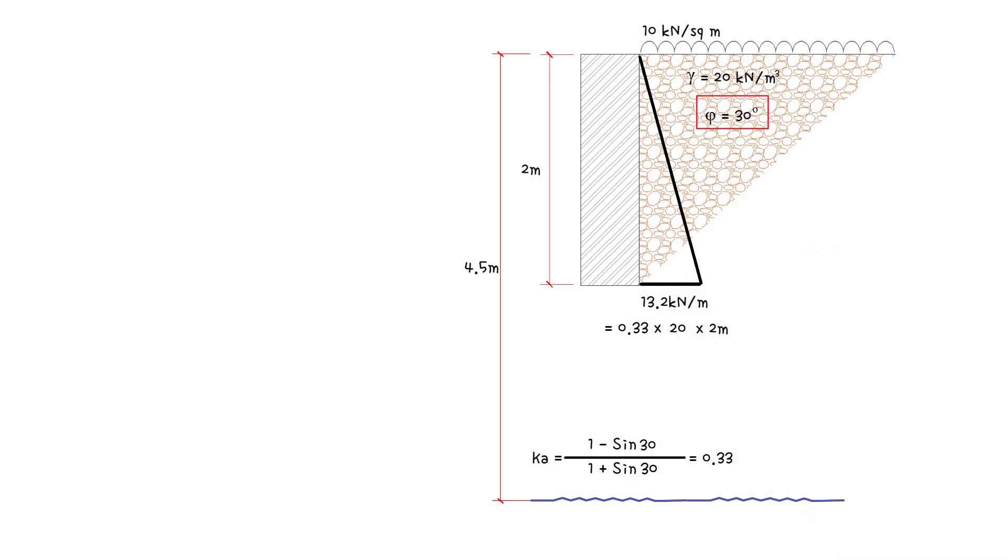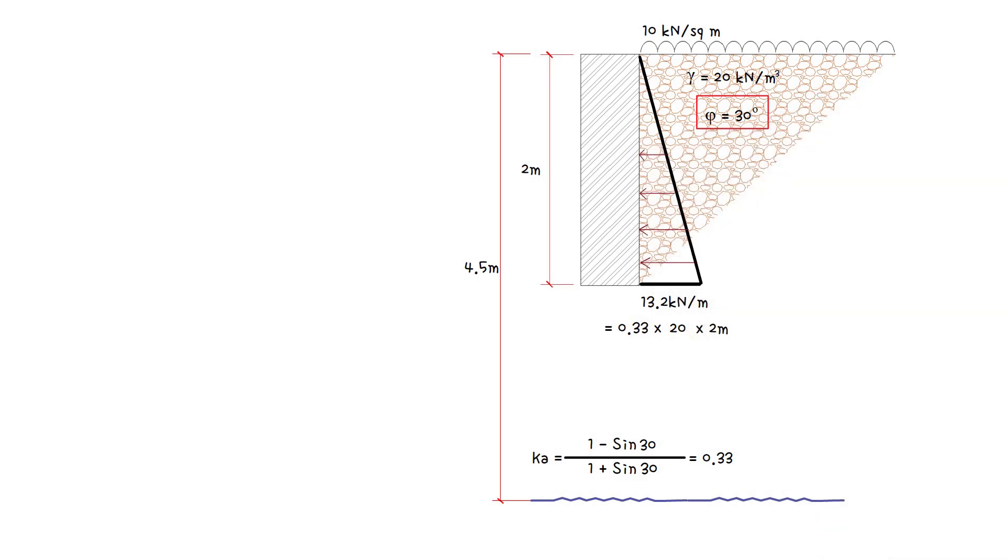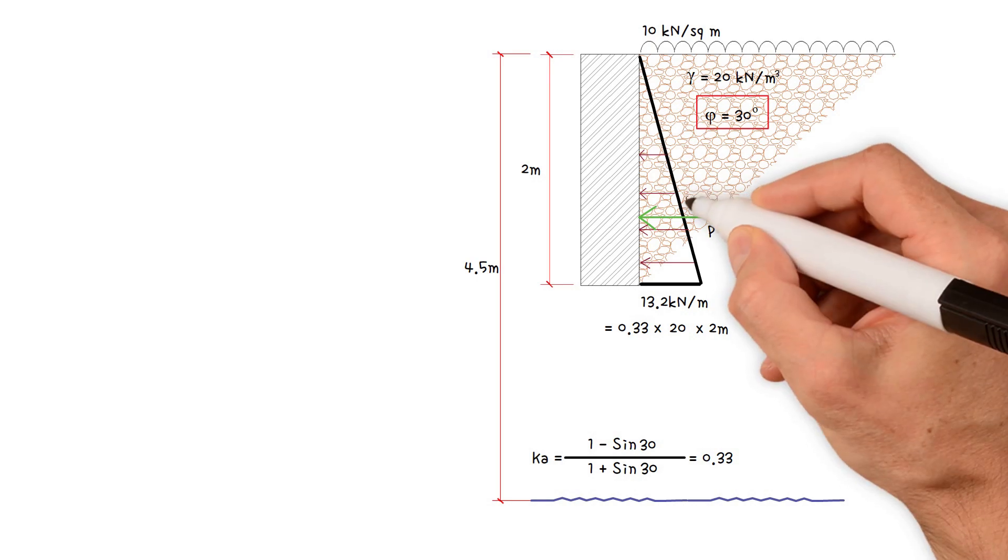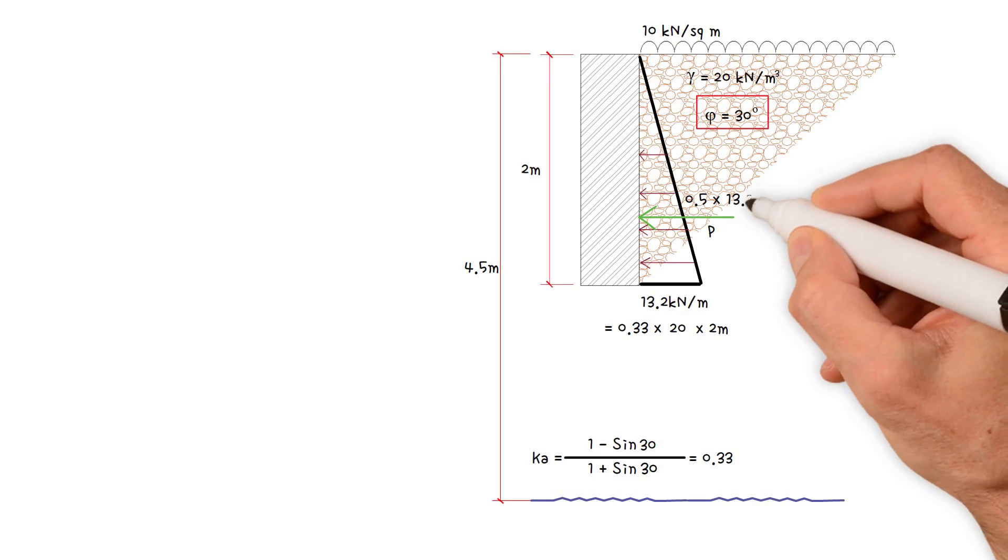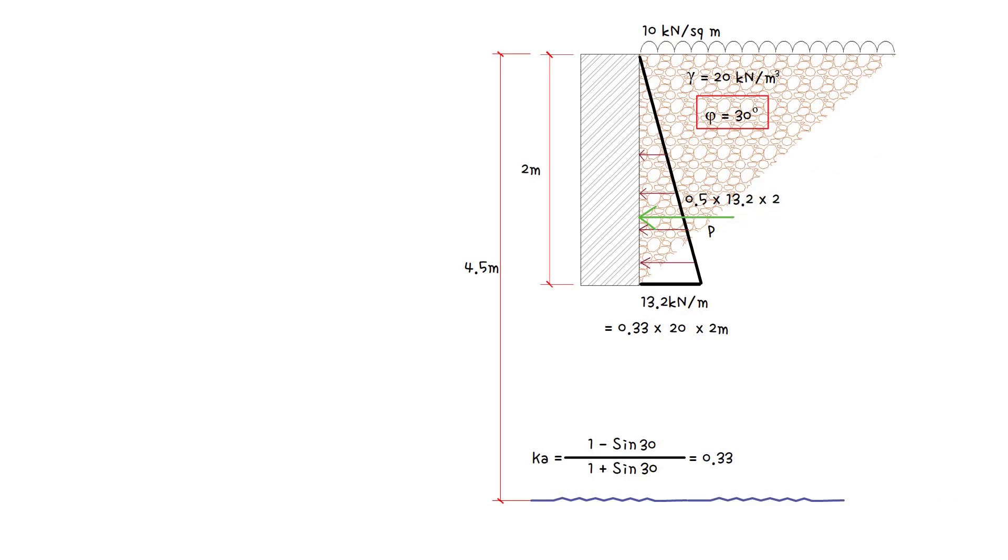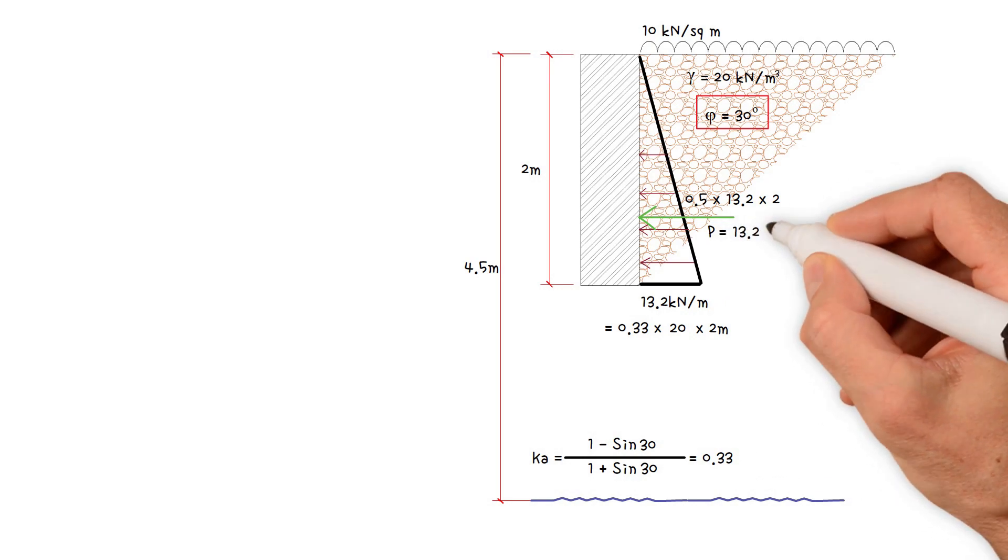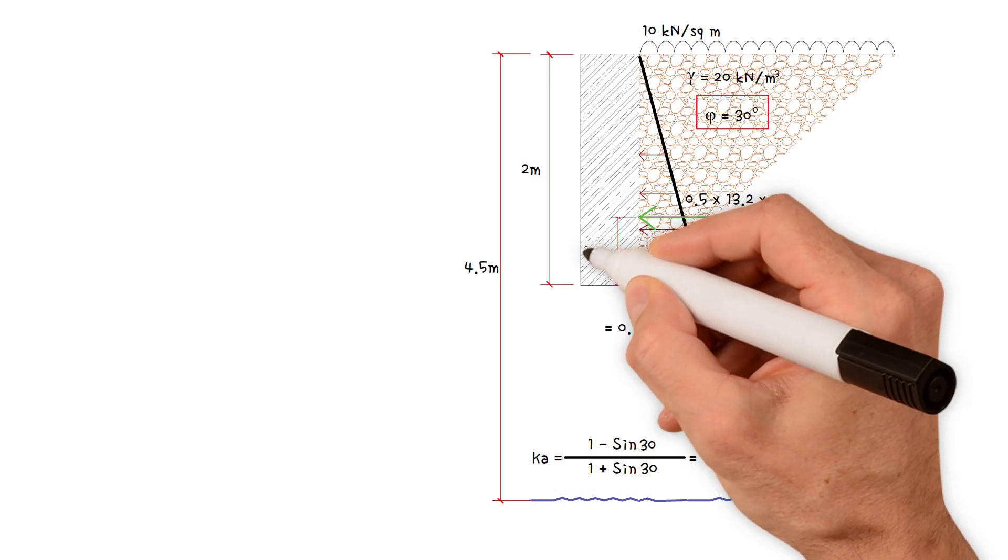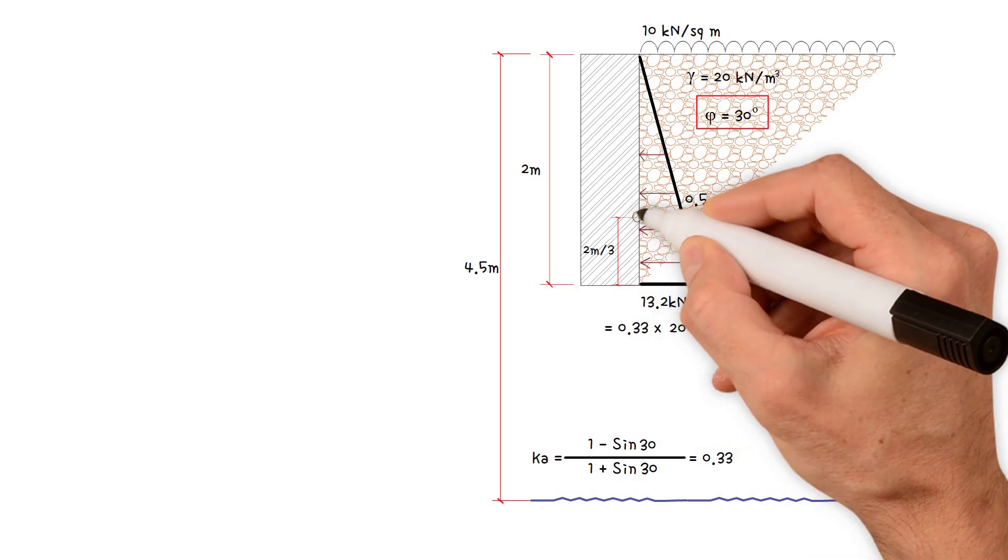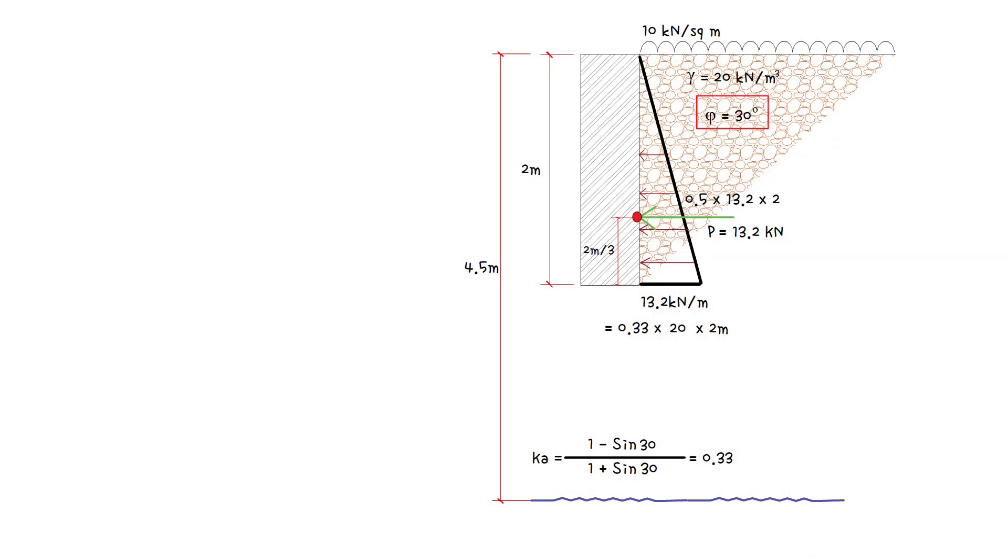Therefore, for a triangular distributed load, the magnitude of the resultant force P is the area of the triangle, which is 0.5 times 13.2 kN per meter per meter times the depth 2 meters. This gives us a value of 13.2 kN per meter run. The force of the triangle acts about one-third of the length of the triangle, so this is the location of the resultant force P.